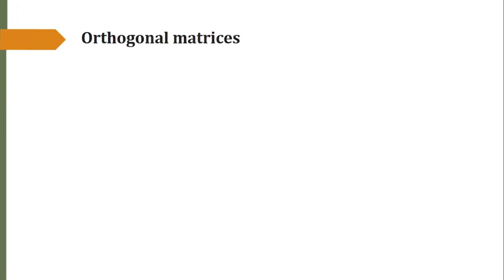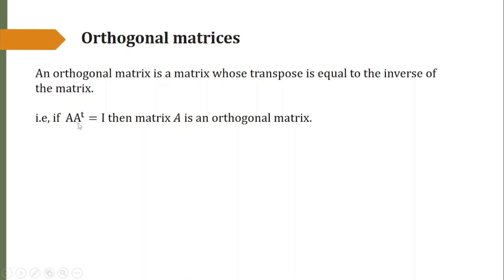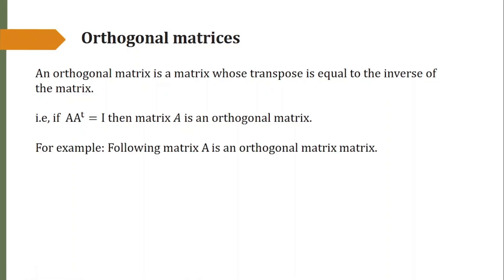Now we see what orthogonal matrices are. These are the square matrices whose transpose is equal to their inverse — that is, if A times A-transpose equals the identity, then matrix A is an orthogonal matrix. Since A-transpose is the inverse of A, we call A an orthogonal matrix. For example, the following matrix is an orthogonal matrix. Later, while solving examples, we'll see how to prove or determine whether a given matrix is orthogonal or not.